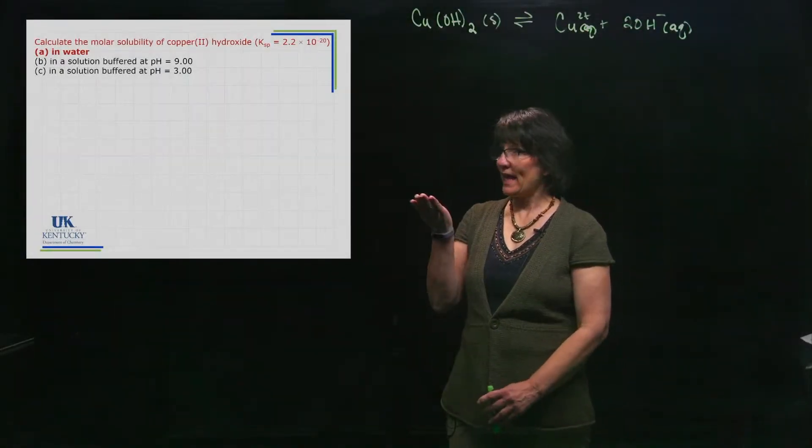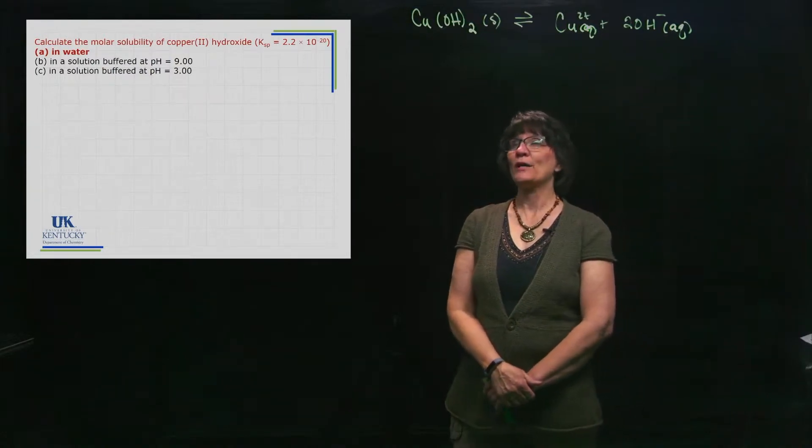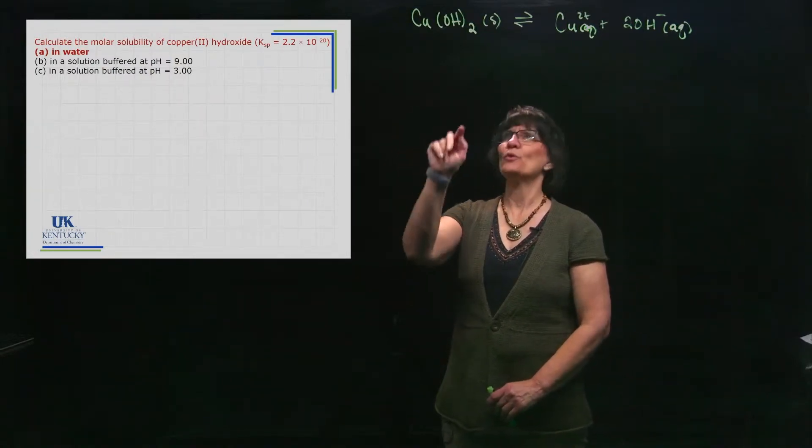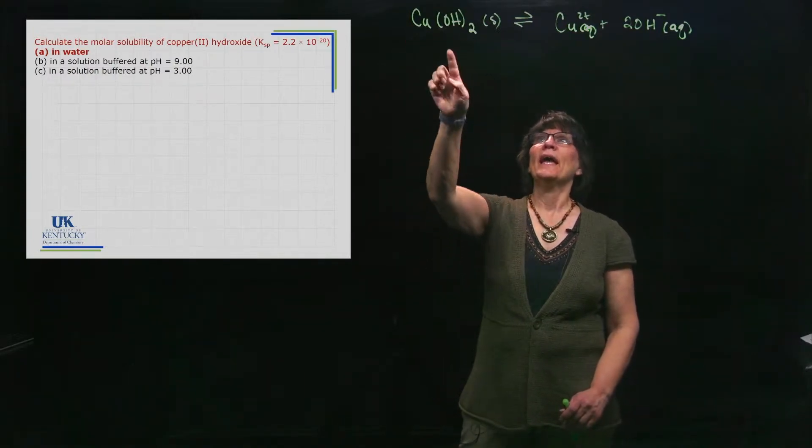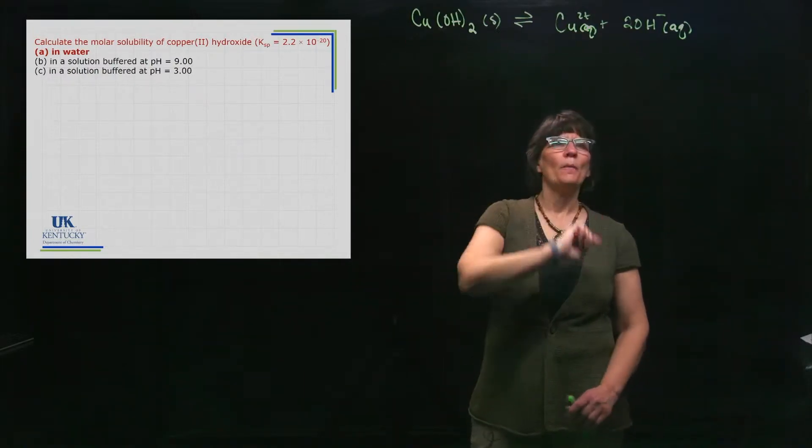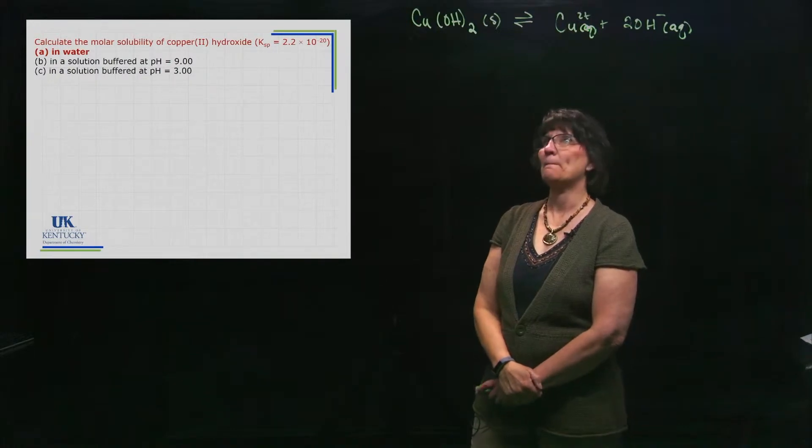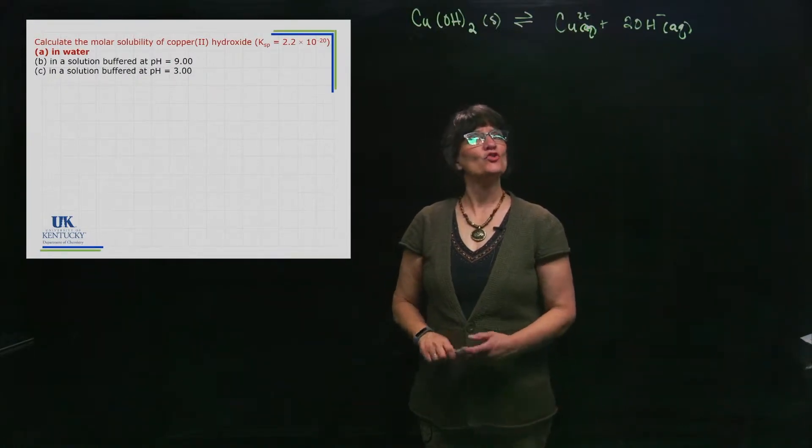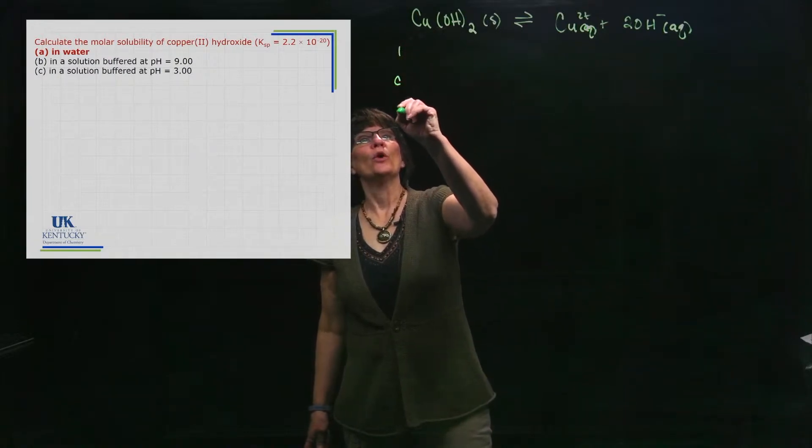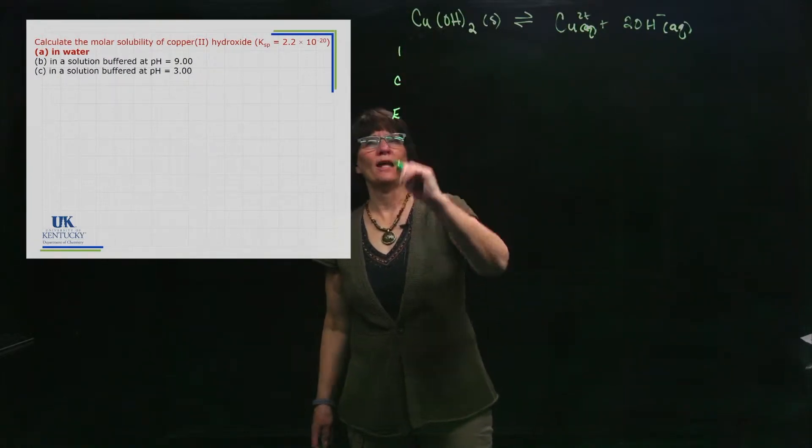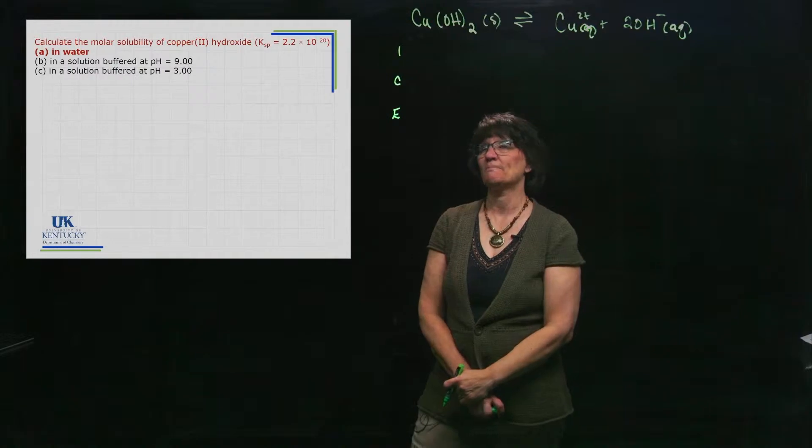Okay, so we're going to do a KSP problem with copper hydroxide. This is copper(II) hydroxide, so it's got a plus 2 charge. I know this is its formula and it's dissolving. I want to know about its molar solubility. It seems like it ought to be a pretty straightforward molar solubility problem. We're going to see that indeed it is not, and we're going to see why it is not.